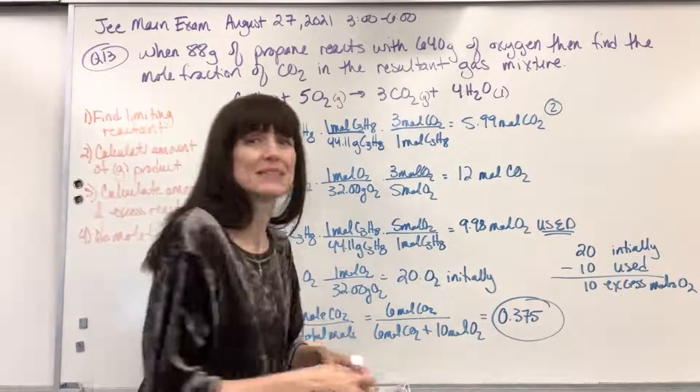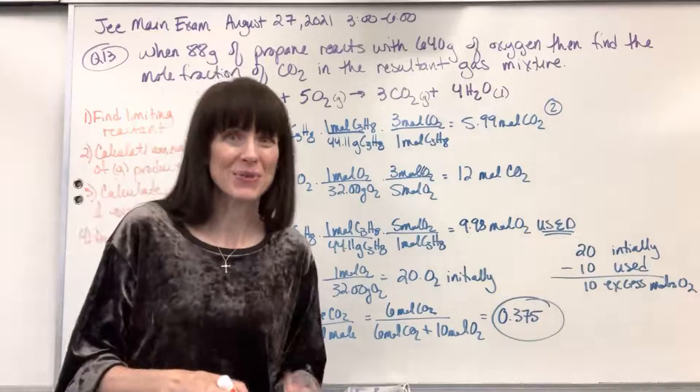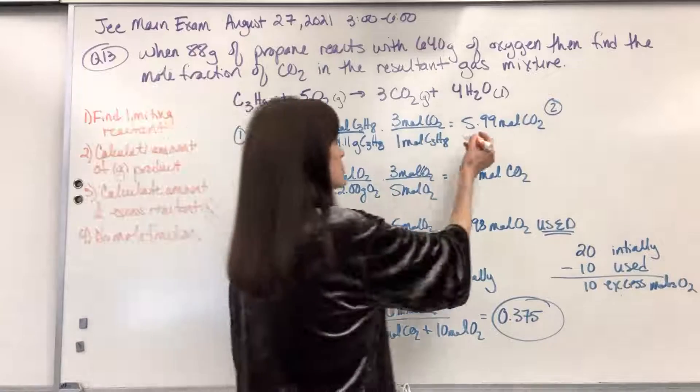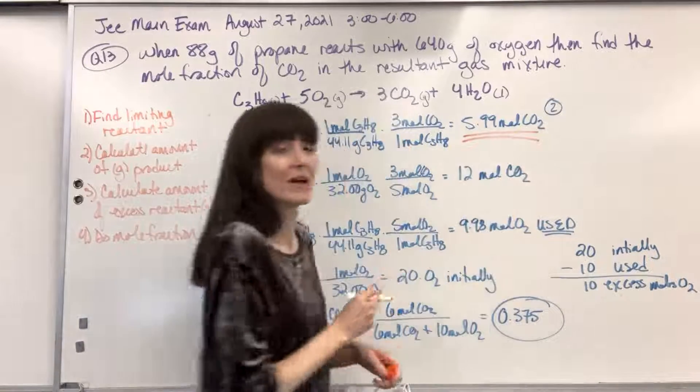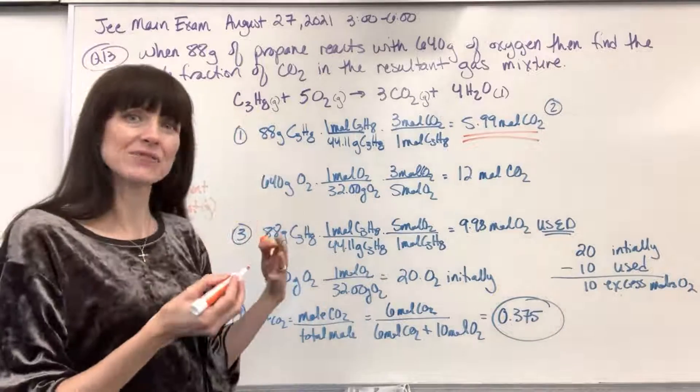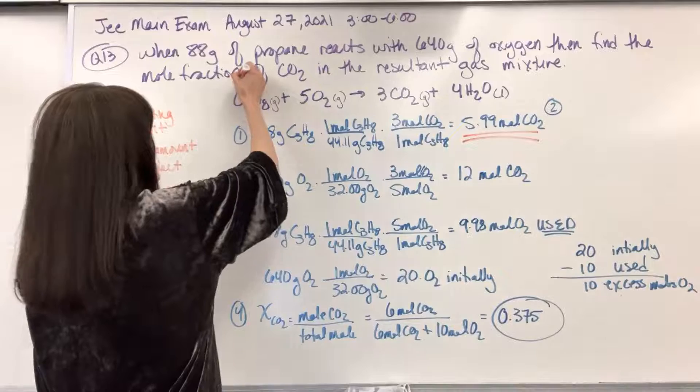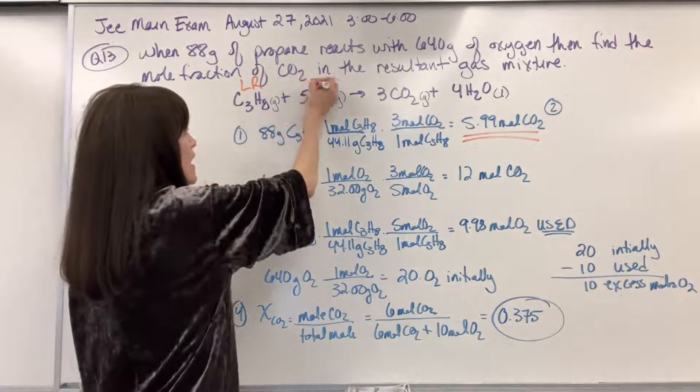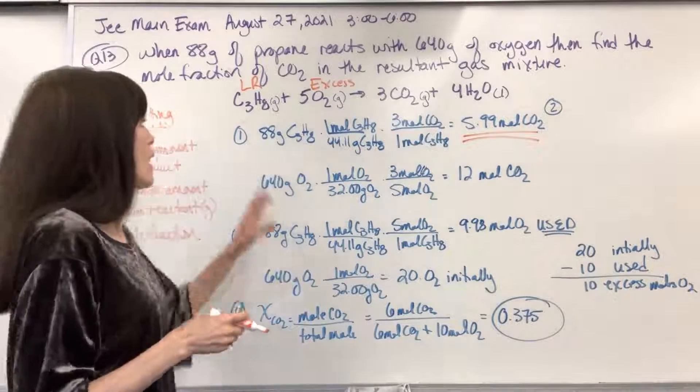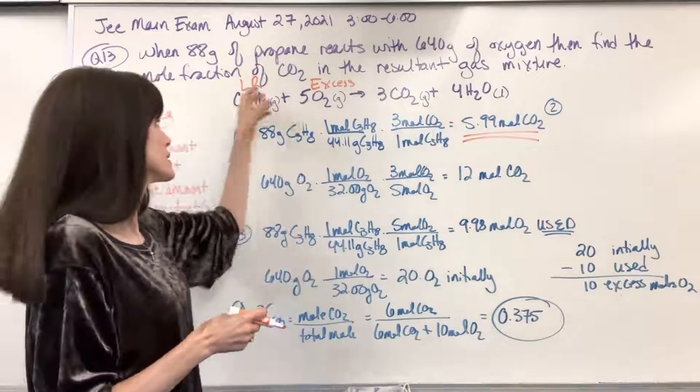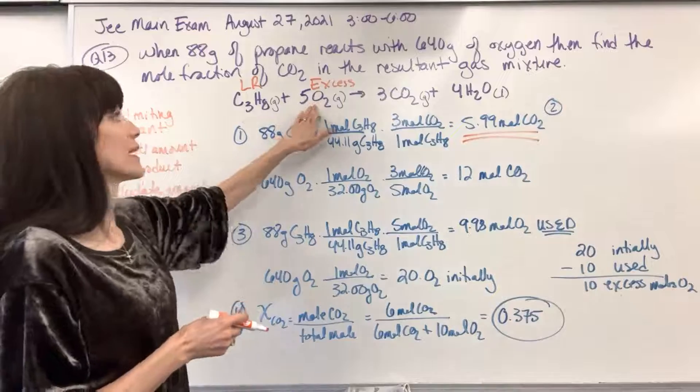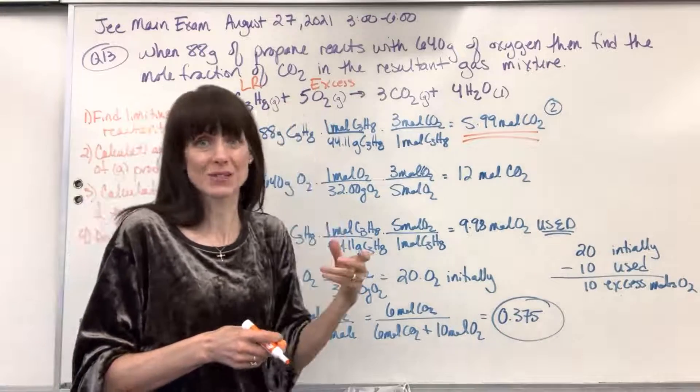Which means if we consume all 640 grams it will produce 12 moles of CO2. Now we step back and say okay which one's limiting reactant? Well you can't make any more than the smallest amount. So the limiting reactant is going to be the propane since it produced the smallest amount. That's going to be the amount of CO2 that will be made. So I'm going to label this up here. Once I identify limiting reactant, I label it. So propane is limiting reactant. Oxygen is going to be the excess. So step back, big principle here. All of that propane will be consumed. When it's consumed it will produce the six moles of the CO2.